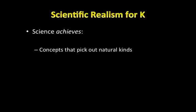First, it discovers concepts that pick out natural kinds. Now we haven't really talked about natural kinds very much, but a natural kind is supposed to be a pre-existing category of things. So, for example, when Kitcher says that concepts pick out natural kinds, what he has in mind is that the concept 'electron' picks out a pre-existing category of things which really are electrons.